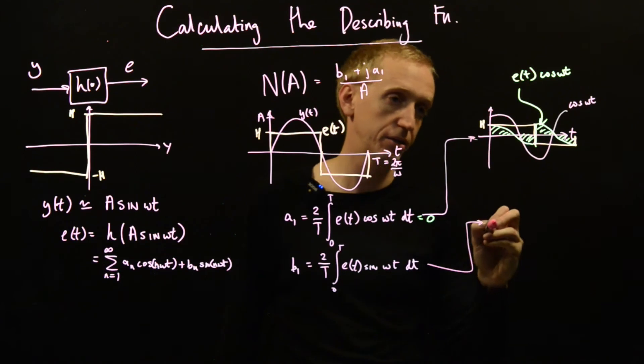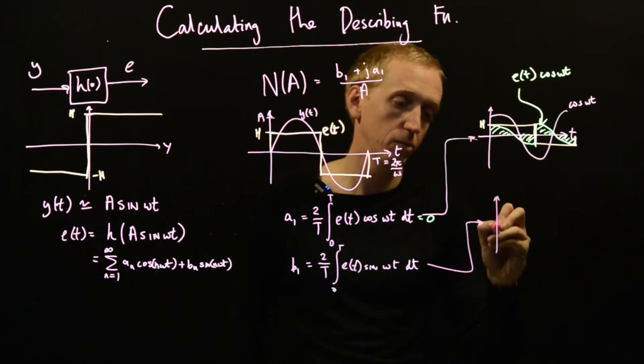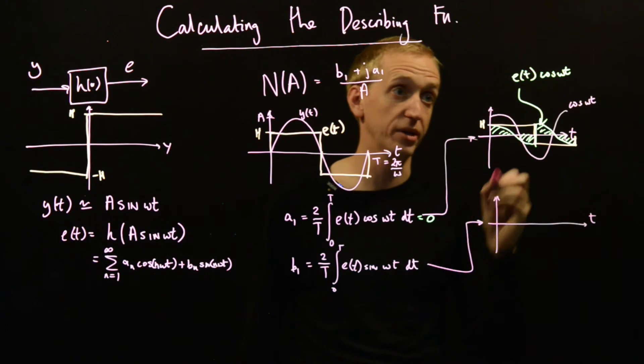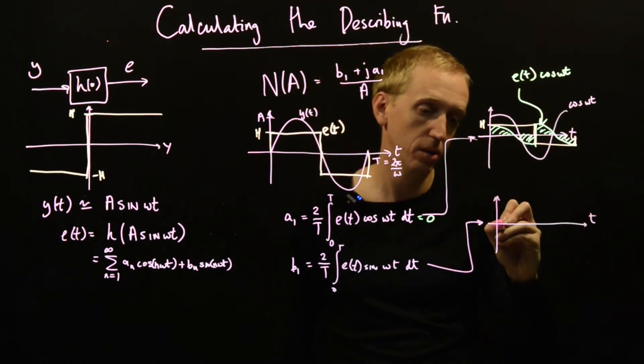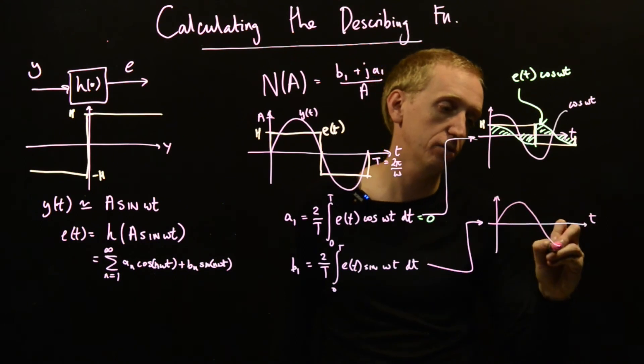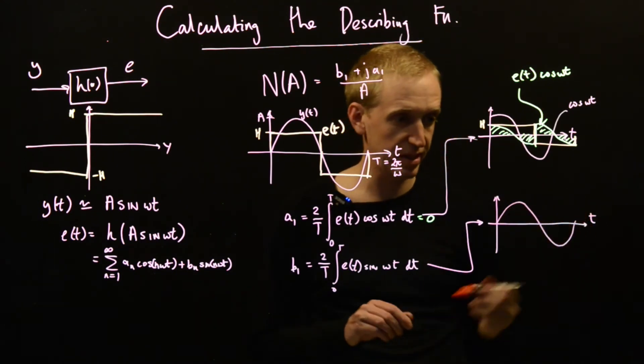Let's find the b₁ coefficient. So let's do the same thing. We draw on a set of axes and let's just try and sketch out what our e(t)sin(ωt) signal is going to be.